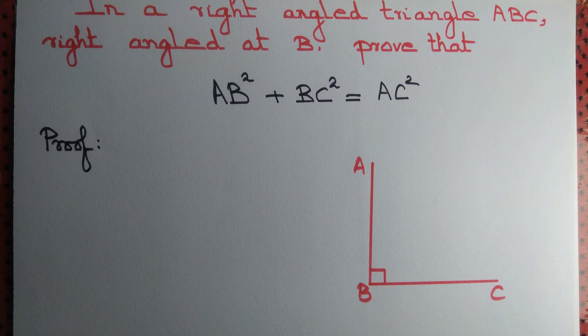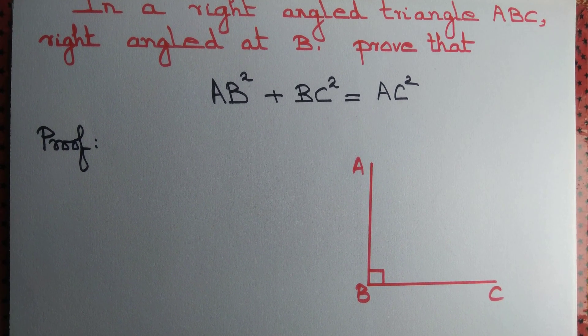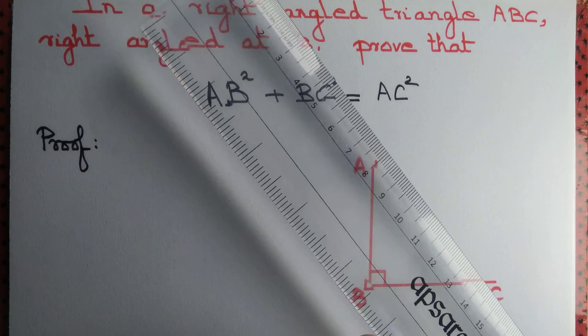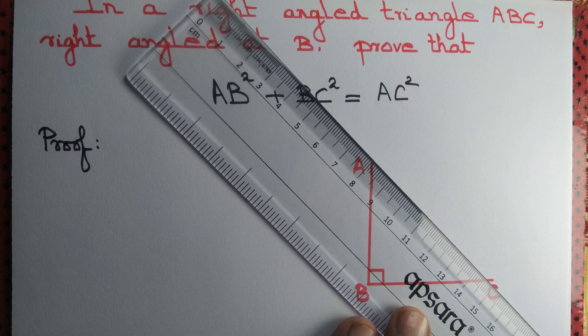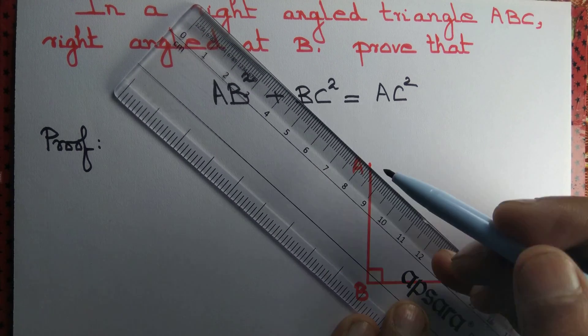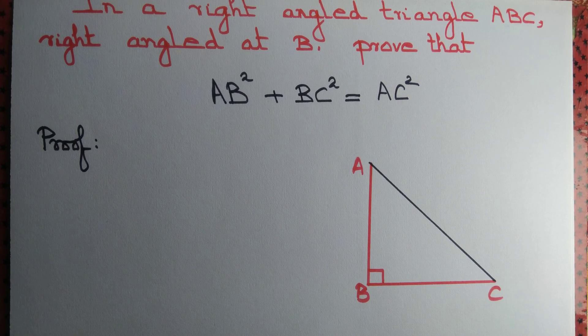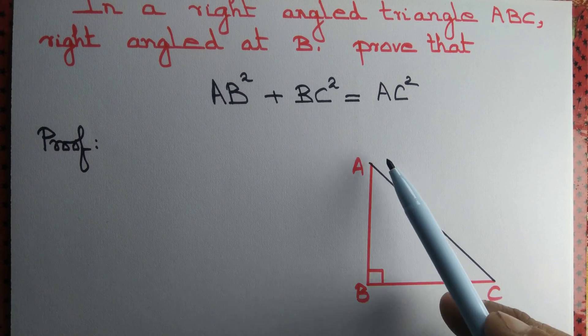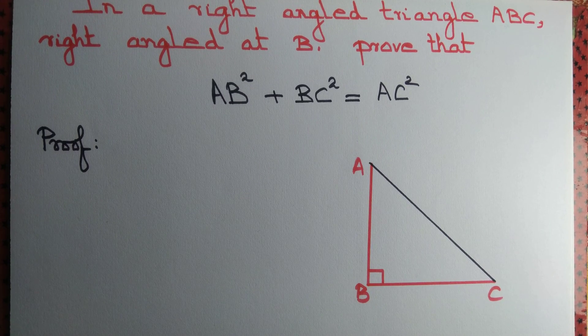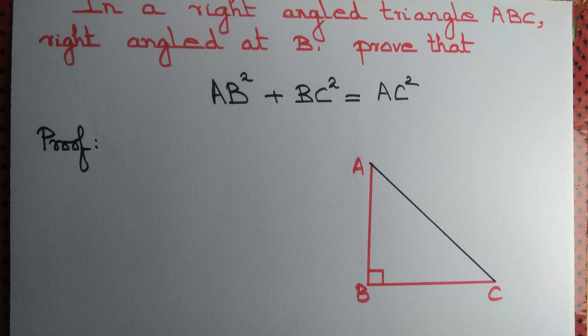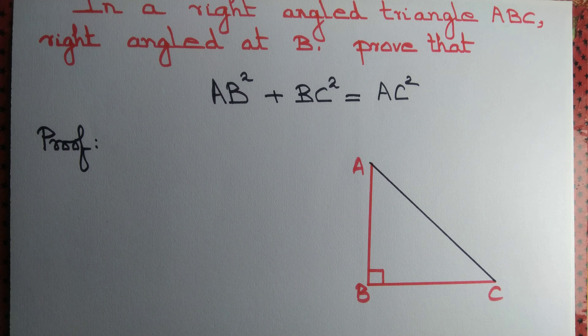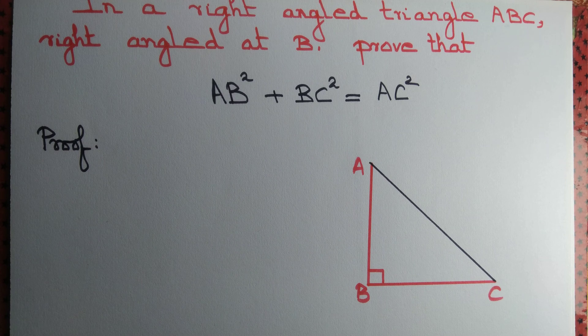For that purpose we have angle B that measures 90 degrees and we join AC. Now what we want to prove is AC square equal to AB square plus BC square. If you remember correctly, this is nothing but Pythagoras theorem and we want to prove Pythagoras theorem using vectors.